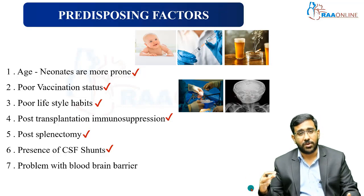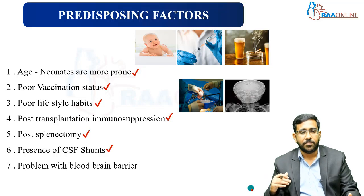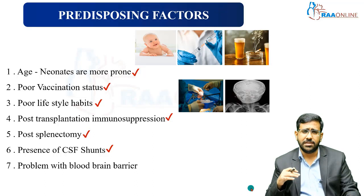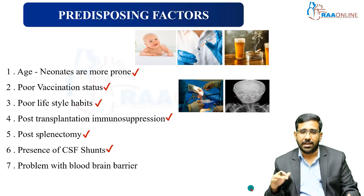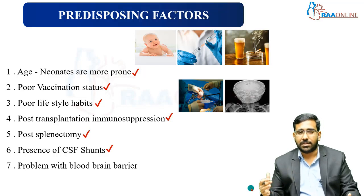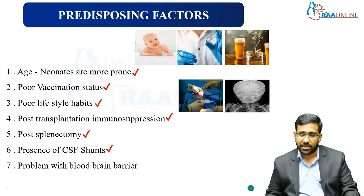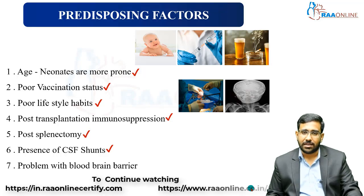The seventh predisposing factor is a breach in the blood-brain barrier, for example due to trauma or a road traffic accident. When the blood-brain barrier is breached, organisms can easily travel from the blood into the brain and central nervous system, causing various forms of infection including meningitis. These are the seven predisposing factors for acute bacterial meningitis.